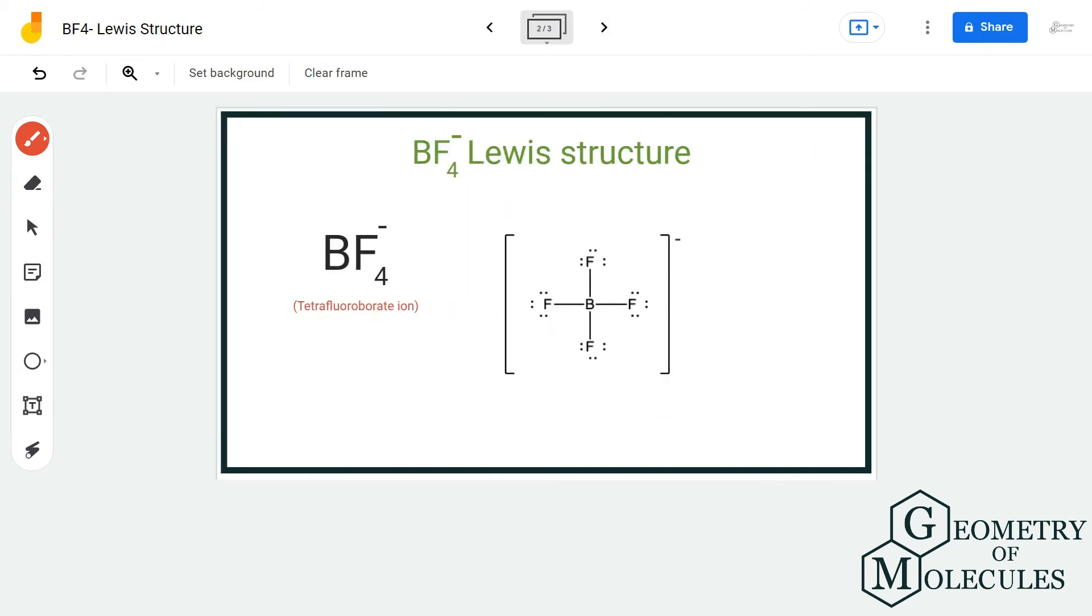Now if you calculate the formal charges, the boron atom over here will have a minus one charge and all the fluorine atoms will have a formal charge of zero. This minus one charge on this ion is because of the minus charge on the boron atom. As it is an ion, do not forget to put brackets and mention its charge.